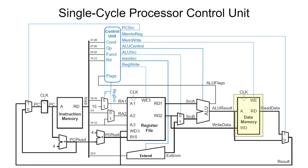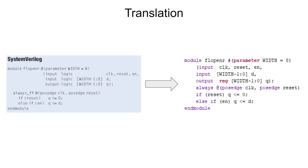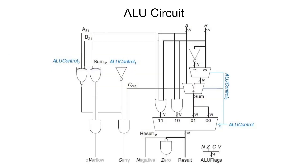The data memory stores the data the program is operating on. Please note that the code written in the textbook was in SystemVerilog, and so we needed to translate the code to Verilog. Some changes included changing logic declarations to registers or wires, and always FF blocks to always at blocks. The main functional block we needed to code was the ALU module. This is the schematic we used to make it, which was referenced from the textbook.